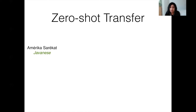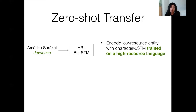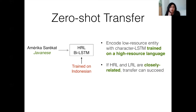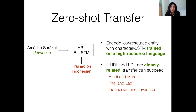To use the model with a low-resource language, we use zero-shot transfer learning. Consider an input entity in Javanese, which is a relatively low-resource language. We simply encode the entity using the LSTM trained on the high-resource language — for example, an LSTM that is trained on Indonesian entities. If the high-resource language used for training is closely related to the low-resource test language, the transfer can potentially succeed because named entities often have similar surface forms in related languages. Relatedness can be through the same language family like Thai and Lao, or through using the same script like Hindi and Marathi. Javanese and Indonesian are also closely related, and thus this example of zero-shot transfer is likely to succeed.